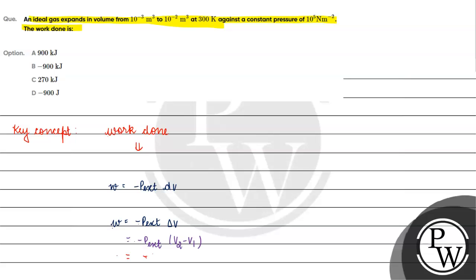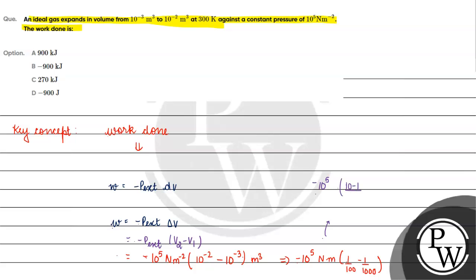Substituting the values: W equals minus 10 raised to the power 5 Newton per meter square, multiplied by (10 raised to the power minus 2 minus 10 raised to the power minus 3) meter cube. This gives us minus 10 raised to the power 5 multiplied by the volume difference, resulting in minus 900 Newton meter.